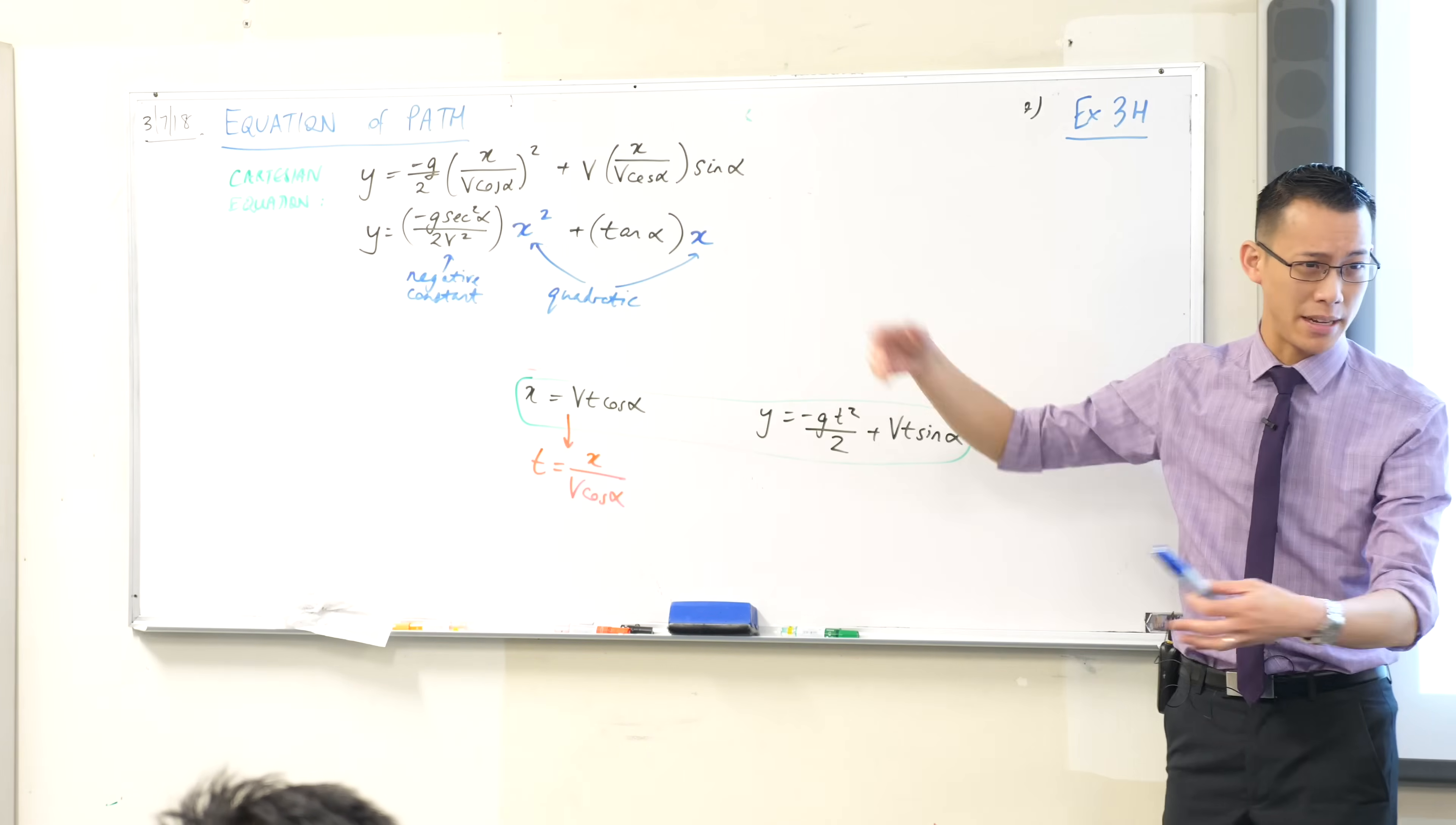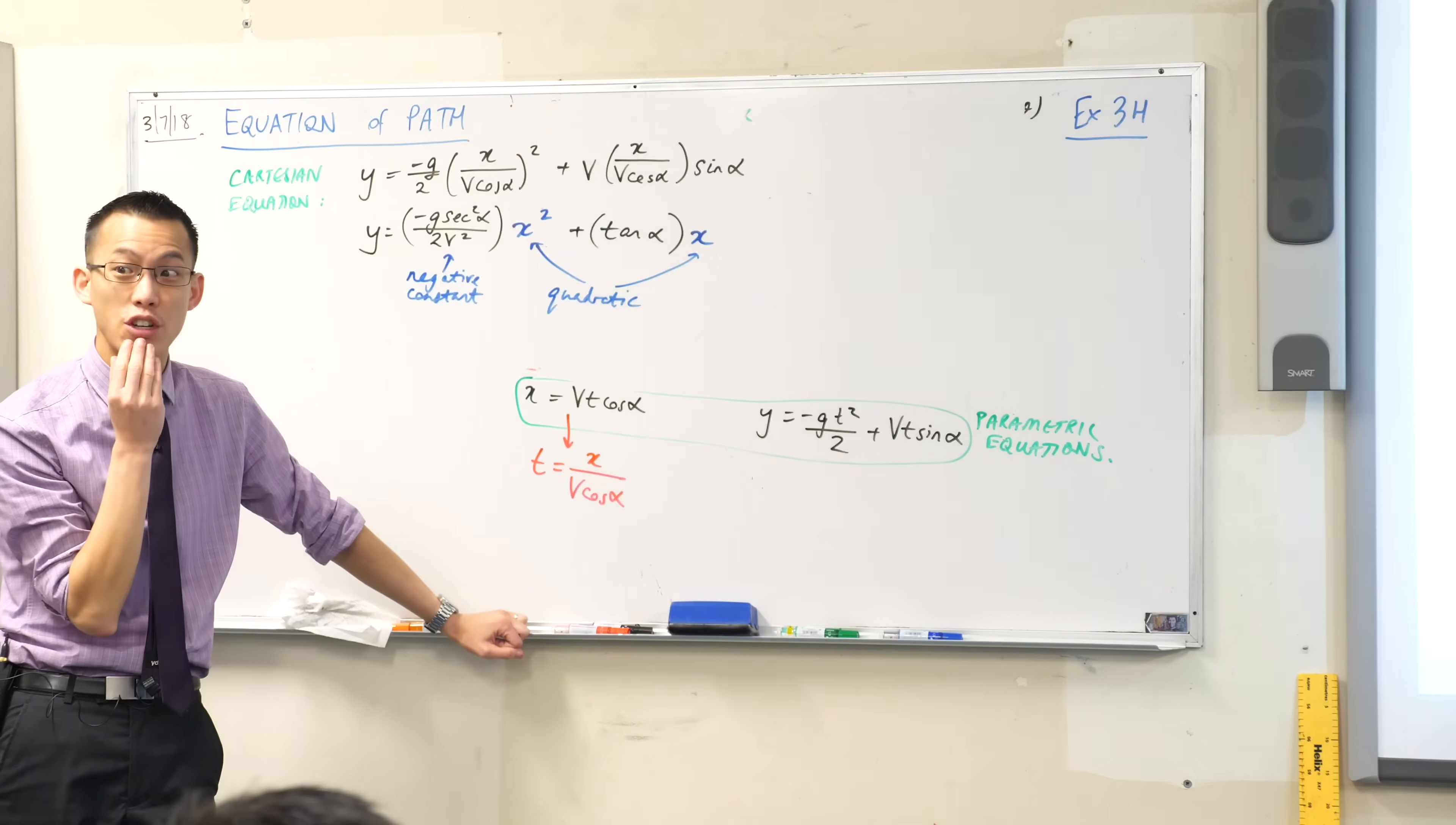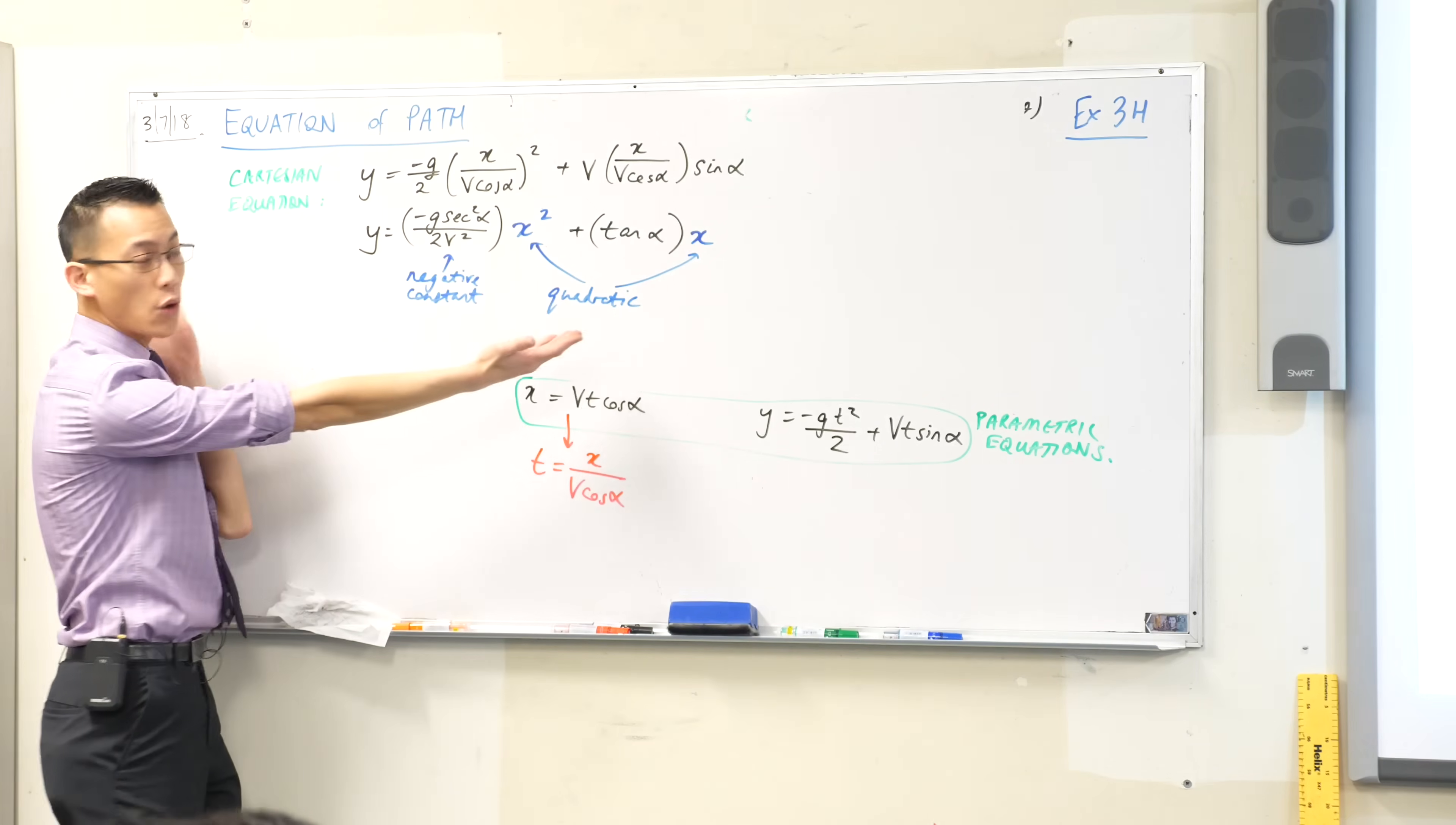Alright, now, why do we care about this? I gave you a reason to care right at the beginning. Do you know what the reason was? Why would we bother eliminating t? Because that took a long time. What was the reason? What kinds of questions do you get asked often in projectile motion questions? The question is often where, right? Where is something happening? Often we don't care when it happens. We just care where it lands, or where it rebounds, or whatever. Or where it is at the highest point. So this equation here will give that to you really quickly.